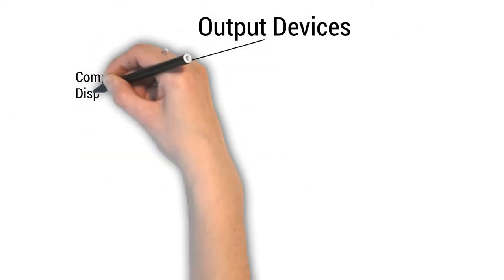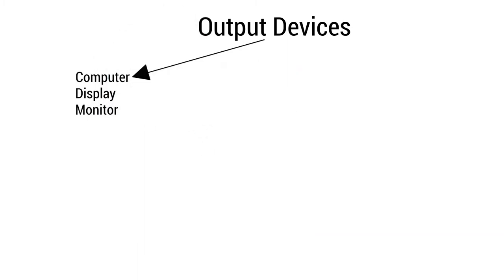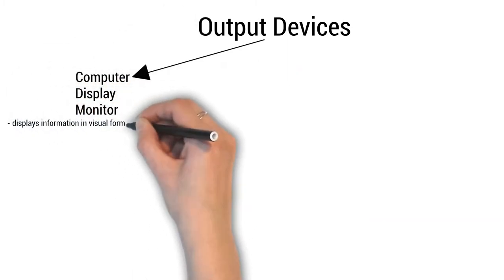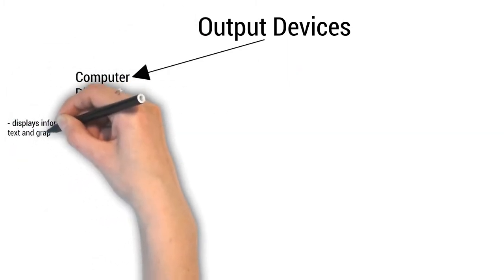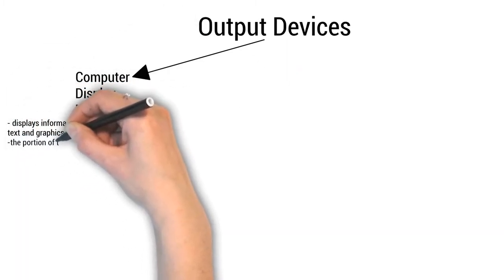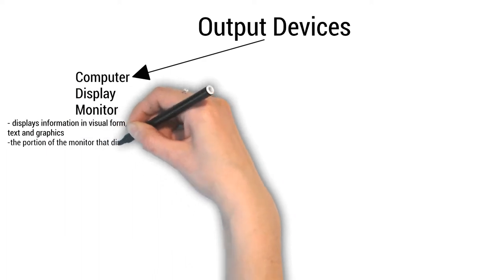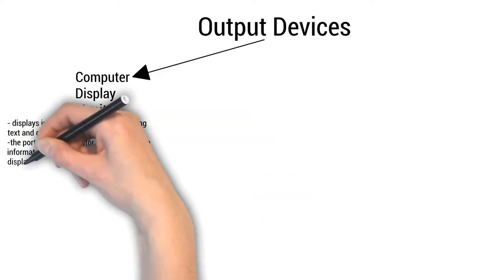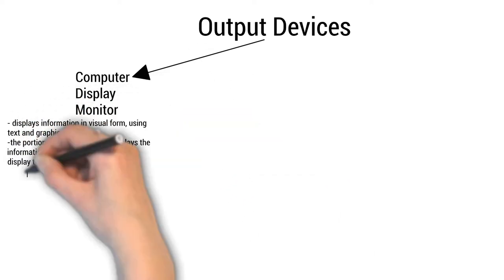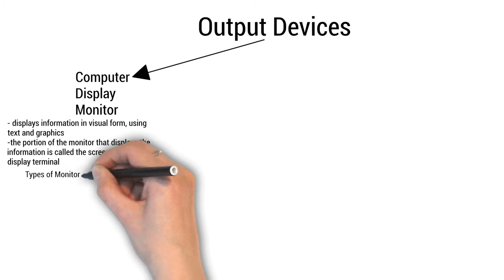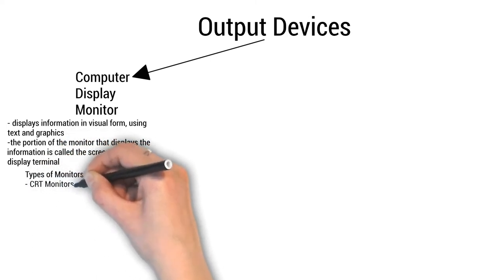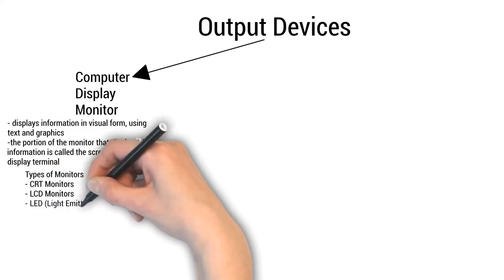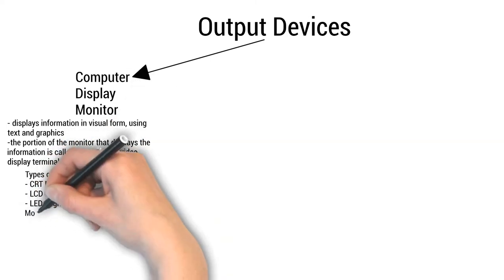Computer Display Monitor: It displays information in visual form using text and graphics. The portion of a monitor that displays the information is called a screen or video display terminal. Types of monitors are CRT monitors, LCD monitors, and LED monitors.